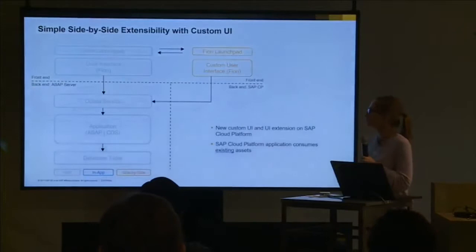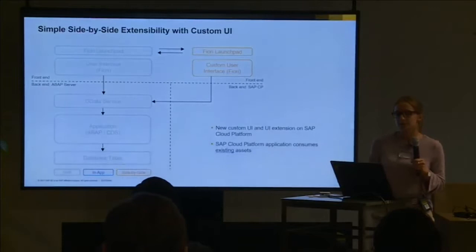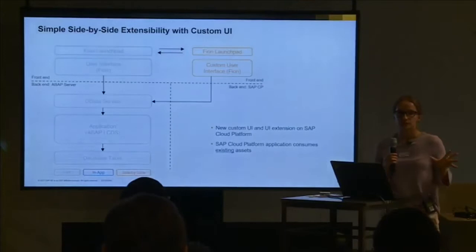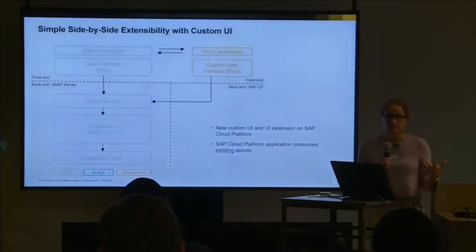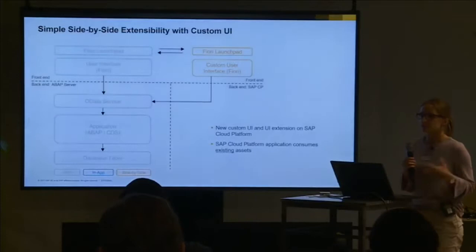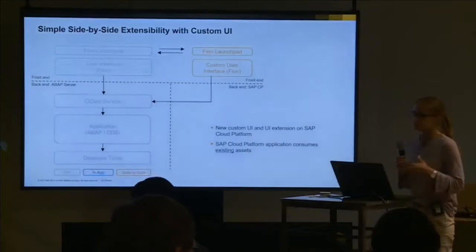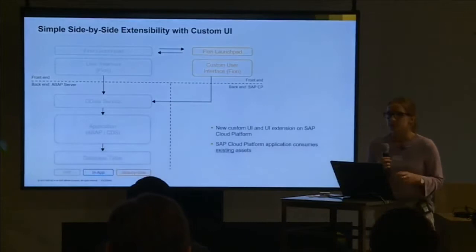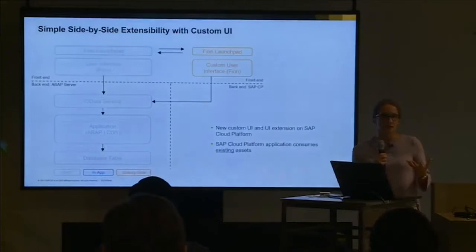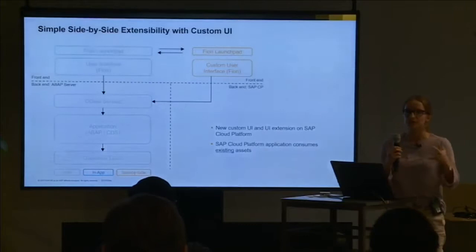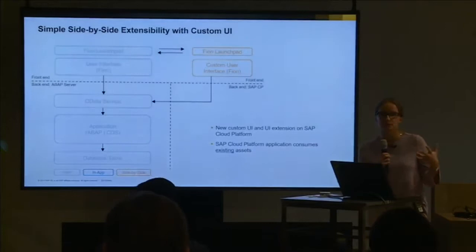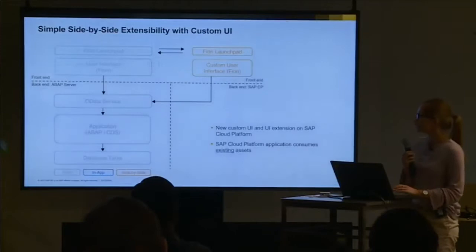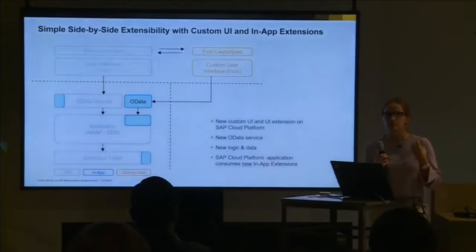The first option is simple side-by-side extensibility with custom UI. You have a standard OData service or CDS view exposed as a whitelisted OData service in the backend S4HANA on-premise or S4HANA Cloud, and you build a UI application in the cloud that consumes the existing OData service. The only thing you build here is a Fiori UI5 application that consumes the OData service. For example, if you want to display line items of FI documents in a graphical way with charts, you'd build an additional Fiori application on top of this data.